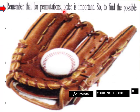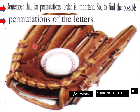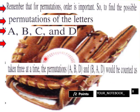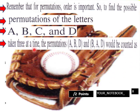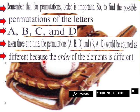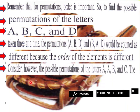Remember that for permutations, order is important. To find the possible permutations of the letters A, B, C, and D taken three at a time, the permutations ABD and BAD would be counted as different because the order of the elements is different. These would be different selections because the order of the elements is different.